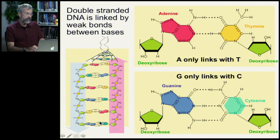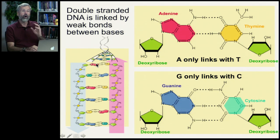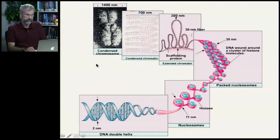In this example, one strand reads G, T, G, A, C — and the complementary partner is C with G, A with T, C with G again, T with A, G with C, T with A. Always those complementary partners.